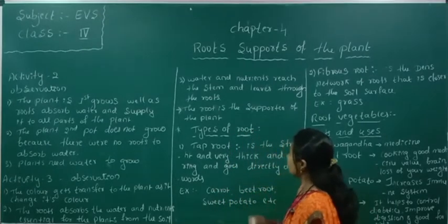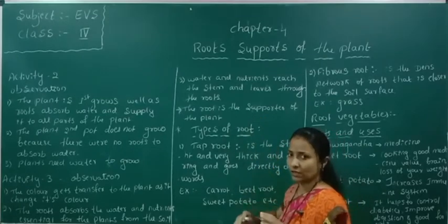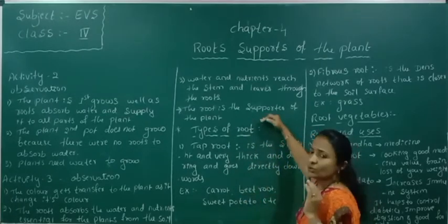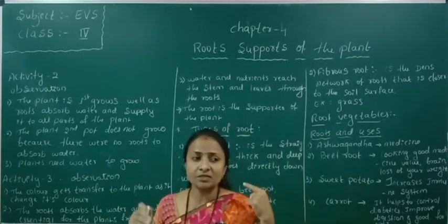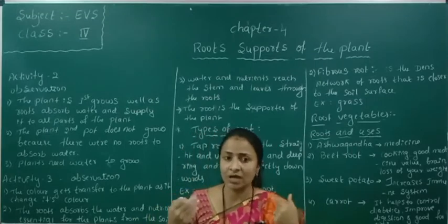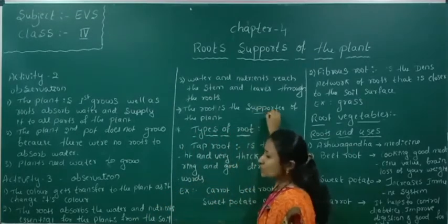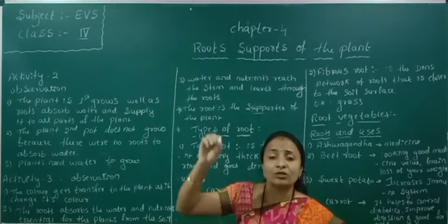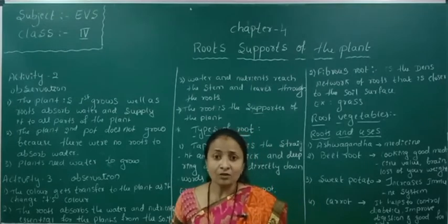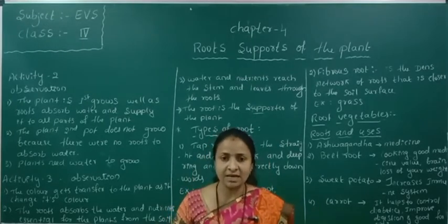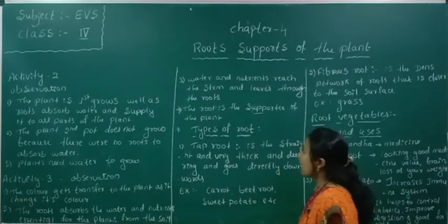The root is the main support of the plant. Just as we have a backbone and cannot stand straight without it, roots are like the backbone of the plant. If the roots hold tightly to the soil, the plant will stand straight. So, roots are the support of the plant.